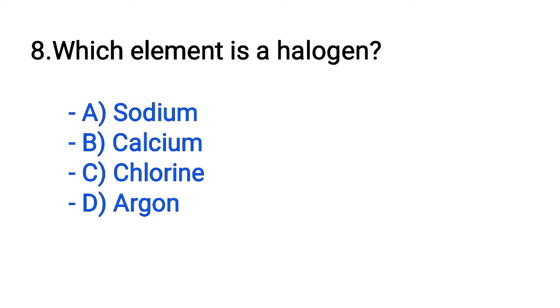Question number 8. Which element is a halogen? Option A: Sodium. B: Calcium. C: Chlorine. D: Argon. The correct answer is option C, Chlorine.